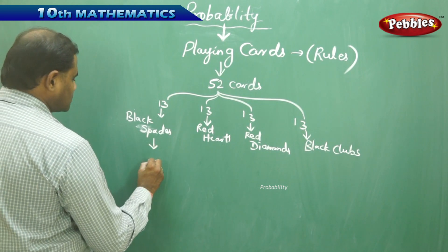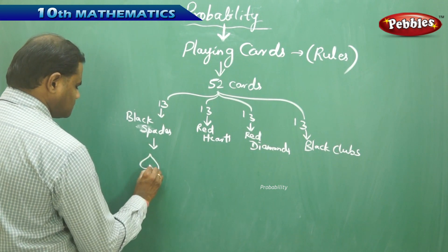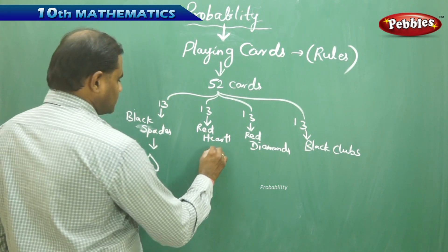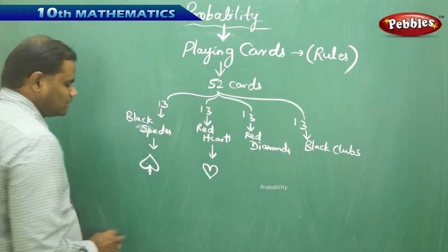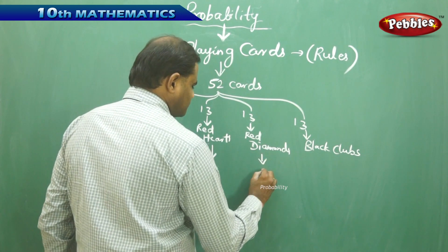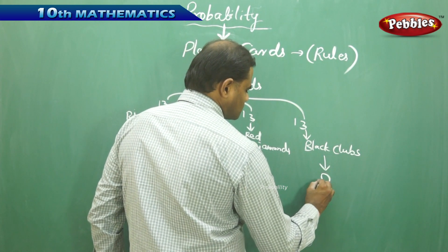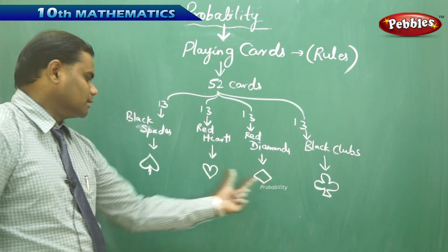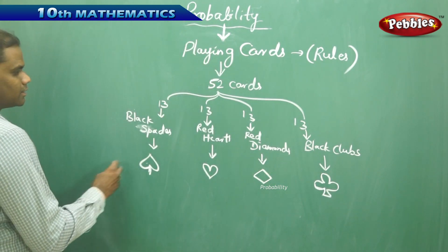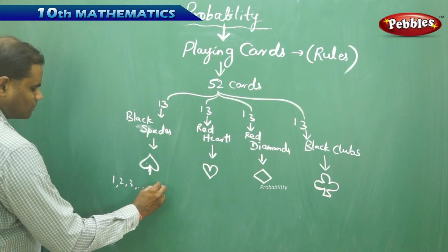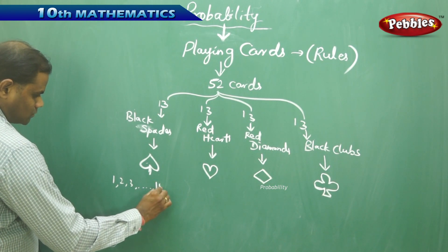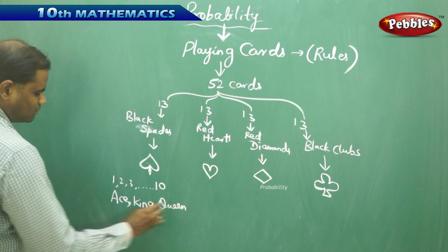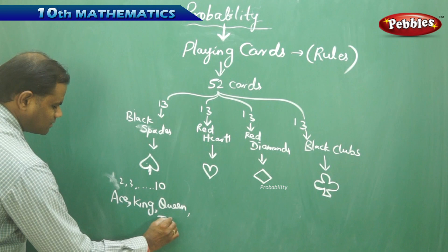Black spades are usually denoted with their own symbol. Red hearts are red in color, black spades are black in color. The red diamond is again red in color, and the black club symbol is black in color. So these two suits are red and these two are black. Each of the 13 cards in each suit are numbered from 1 to 10, and then we have ace, king, queen, and jack.